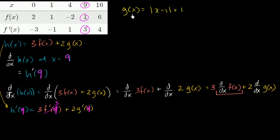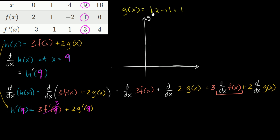Let's look at this function more closely — let's try to graph it to visualize what's going on. When does this absolute value function hit a minimum point? The absolute value of something is always non-negative, so it hits a minimum when the expression inside equals 0, which is when x equals 1. When x equals 1, the absolute value term is 0, so g of 1 is 1.